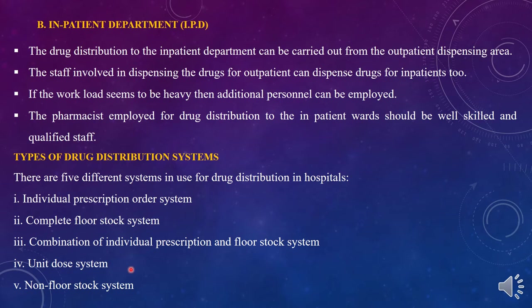There are five different types of drug distribution systems for the inpatient department: first, the individual prescription order system; second, the complete floor stock system; third, a combination of individual prescription and floor stock system; fourth, the unit dose system; and fifth, the non-floor stock system.